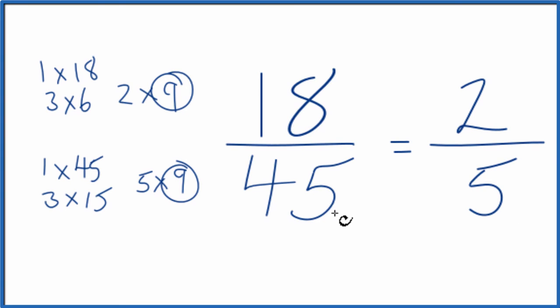So we've simplified 18/45 down to 2/5. These are equivalent fractions. If you divide 2 by 5 or 18 by 45, you're going to get the same number. They're equal, we've just simplified or reduced 18/45 down to 2/5.